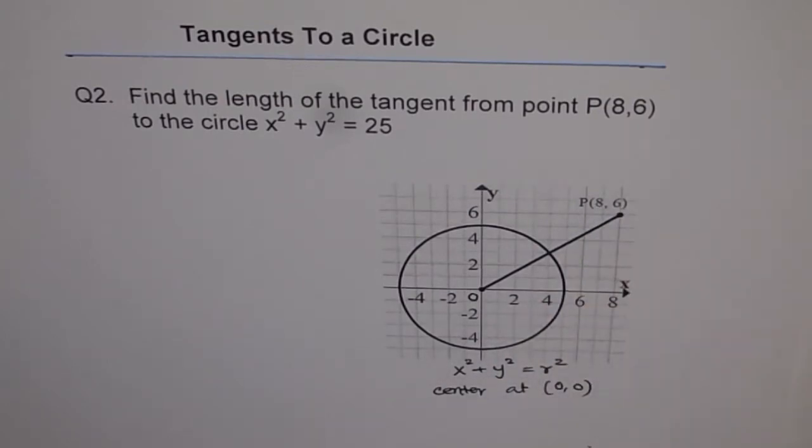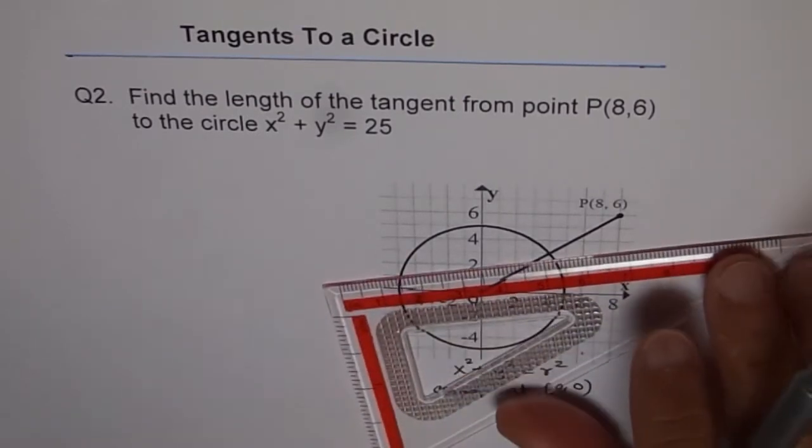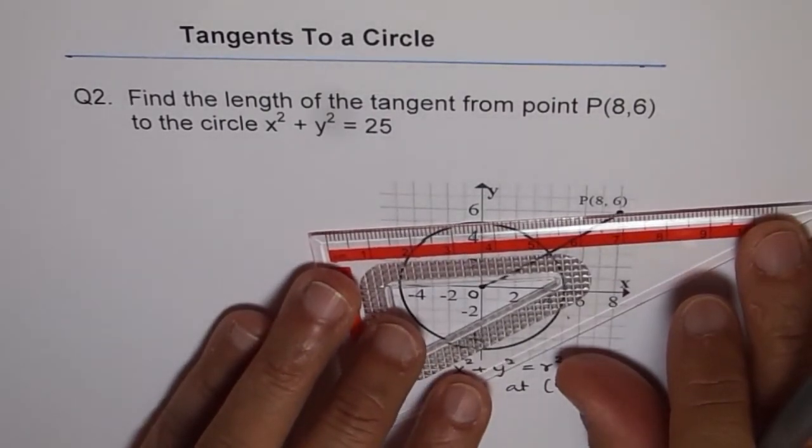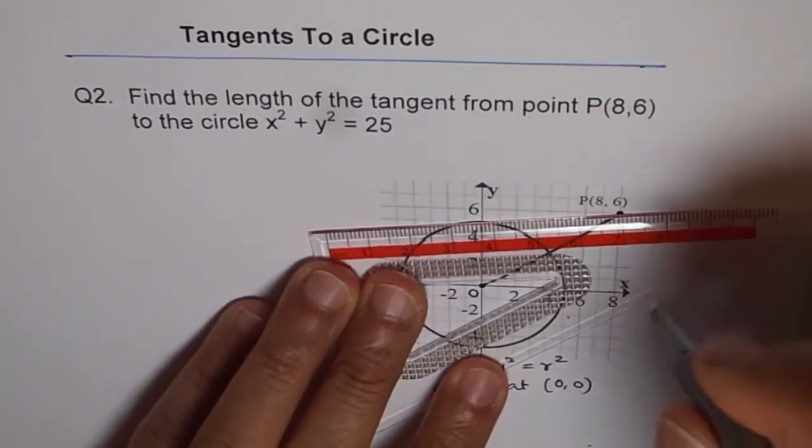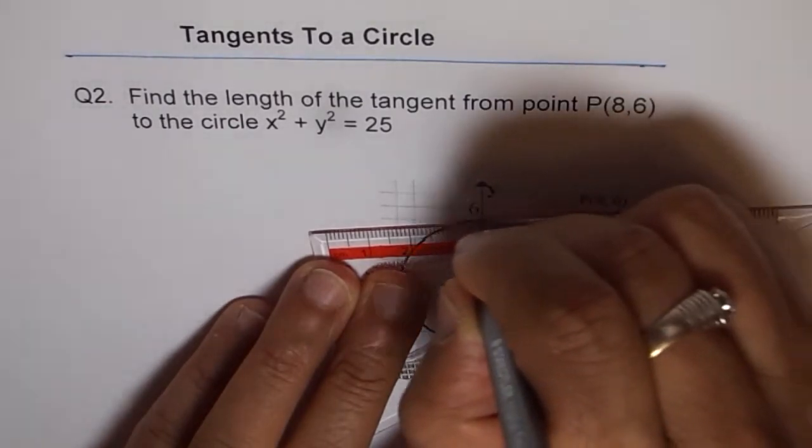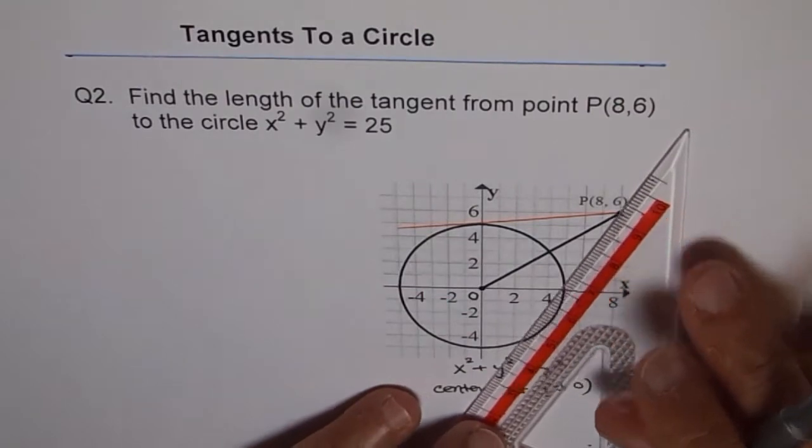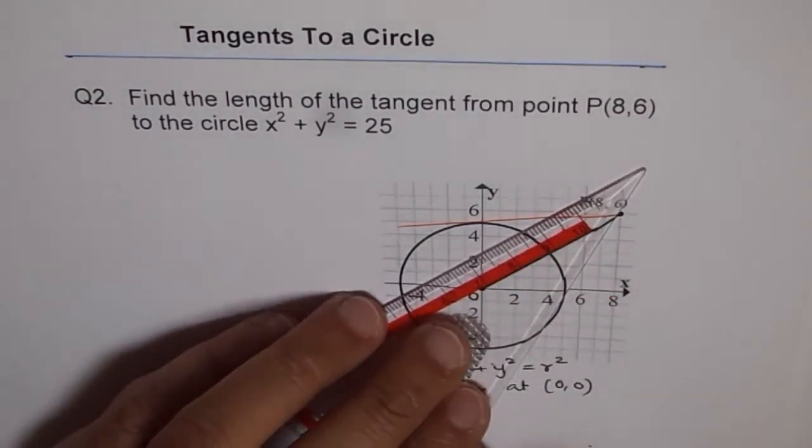And what we need to find is length of the tangent from point P to the circle. So we can draw a tangent from here. For example, this could be one of the tangents. As you can see from here, we can also draw this tangent.